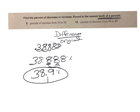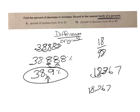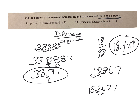Number 10: we're going down from 98 to 80, so the difference there is 18. 18 divided by the original — 18 divided by 98 — gets me 0.18367. I move it over 2: 18.367%. To the nearest tenth, I look over to the 6 — it tells me to round it up — so it's 18.4%. This is a percent of decrease.